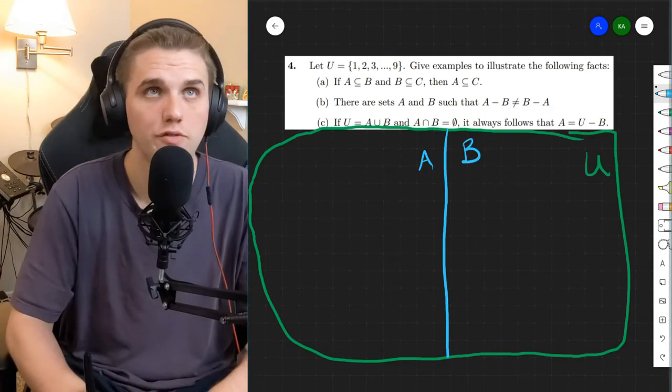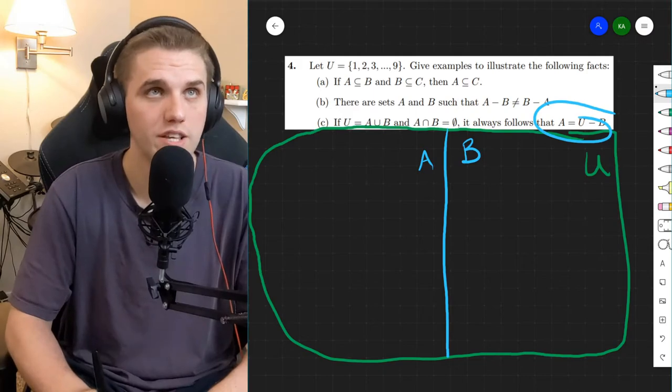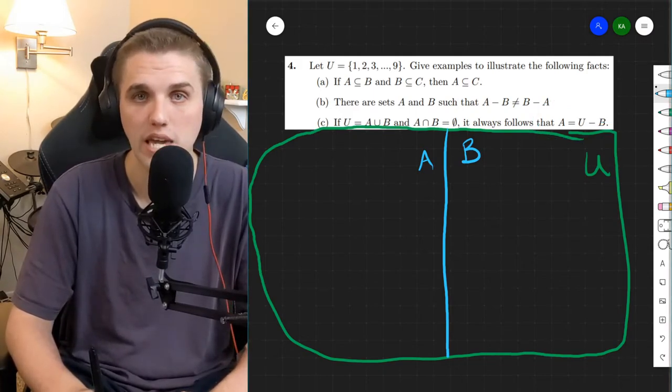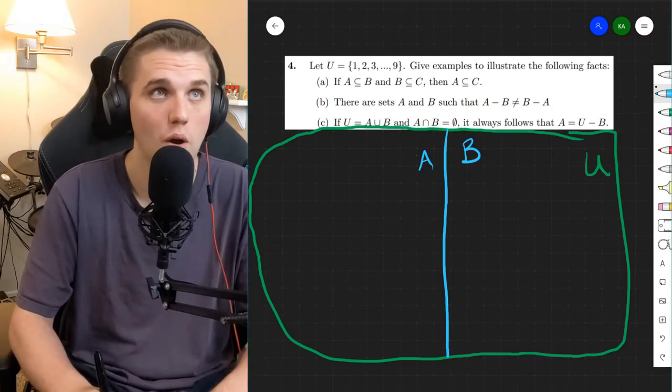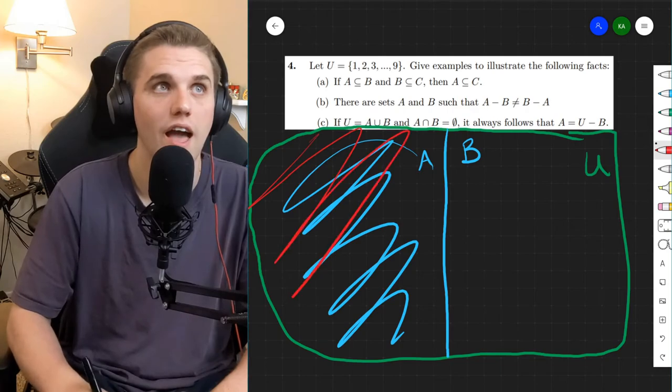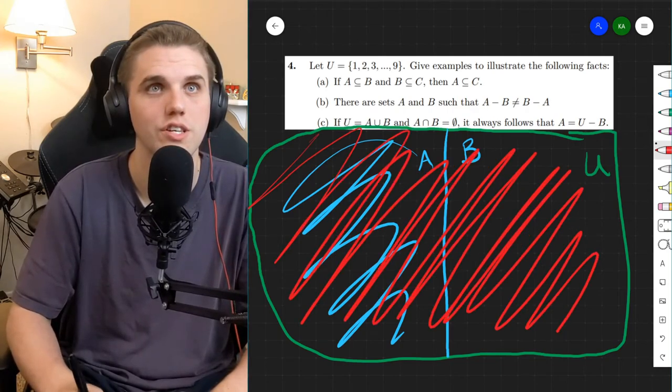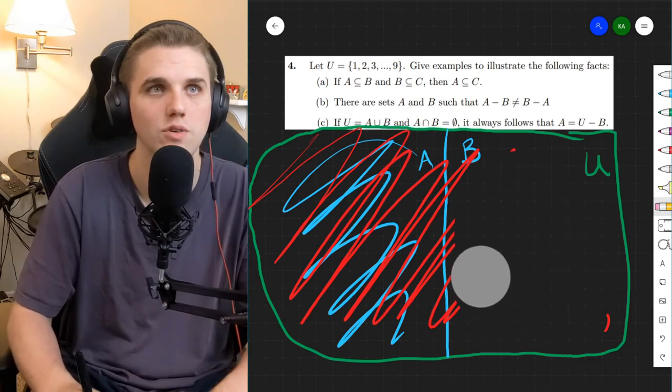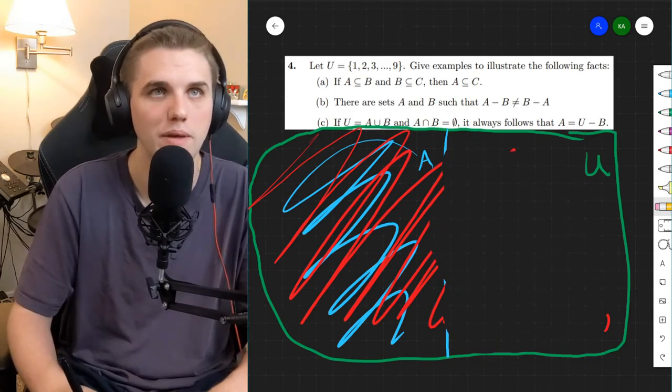So it always follows then, if this is the setup, that A is just the universe minus B. Yeah, if I want to get everything in here, I would just take everything in the universe, and then I could just get rid of everything in B. So subtract B, and then I'd be left with A.